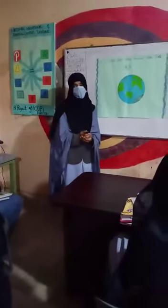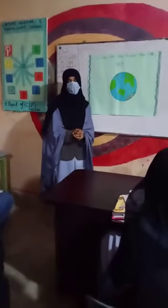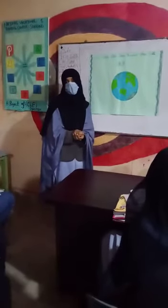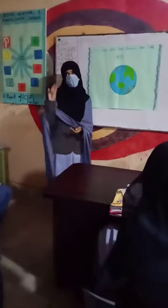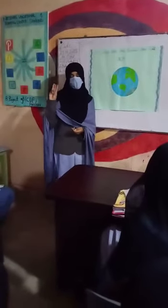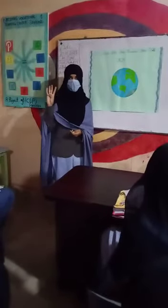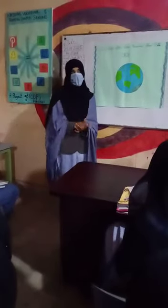The Earth is the fifth largest planet in our solar system. The Earth is larger than four planets: Jupiter, Saturn, Neptune and Venus. It is smaller than three planets: Mercury, Mars and Venus.